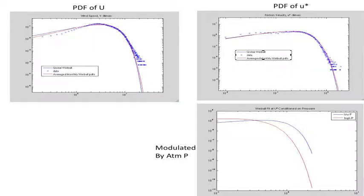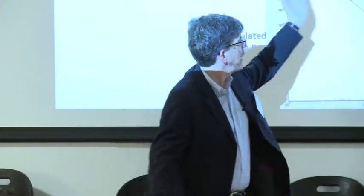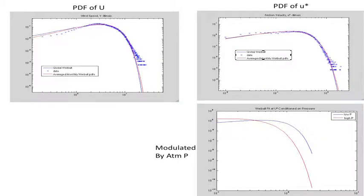Here is a log-transform probability density function of wind speed and of the friction velocity U*. We get improved fit just by fitting the friction velocity instead of the wind speed directly. Importantly, if we separate and stratify wind speeds for periods with high atmospheric pressure versus low atmospheric pressure, we get two very different probability density functions. So if instead of using purely homogeneous statistics, we condition first on what type of pressure system we're in, we achieve an improved fit.